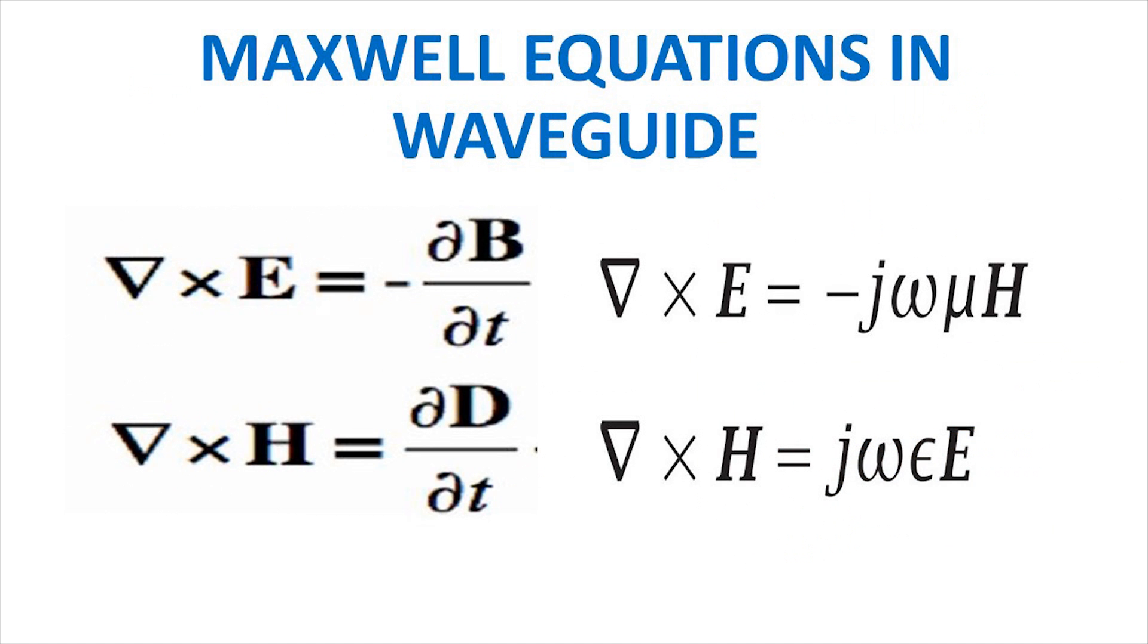Next let us look at the mathematical aspect, Maxwell equations in a waveguide. Two equations relating electric field and magnetic field are given on the left. In the second equation, we have assumed current density to be zero. Taking Fourier transform of these two equations with respect to time, we obtain the equations given on the right.